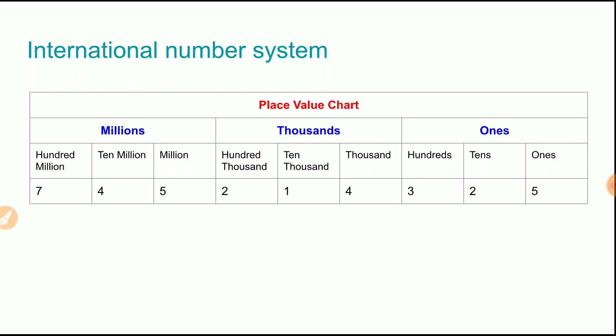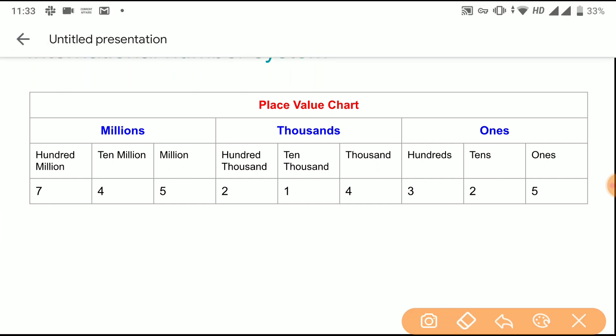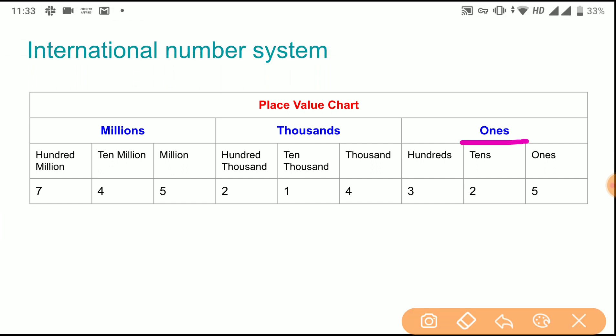in international number system all the periods consist of three places. As you can see, all the periods consist of three places.